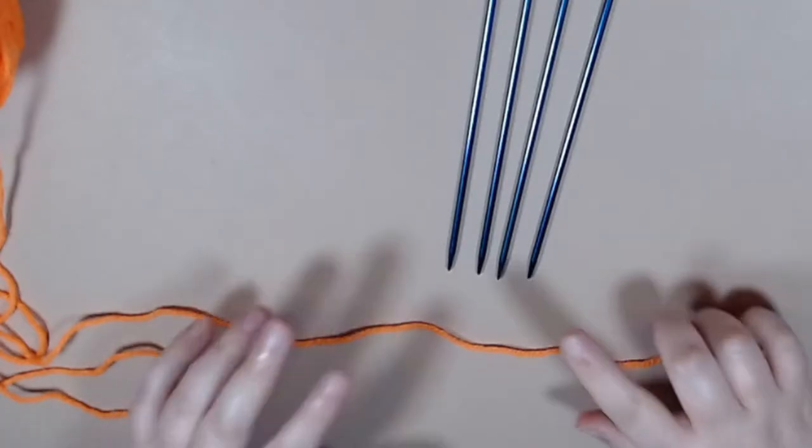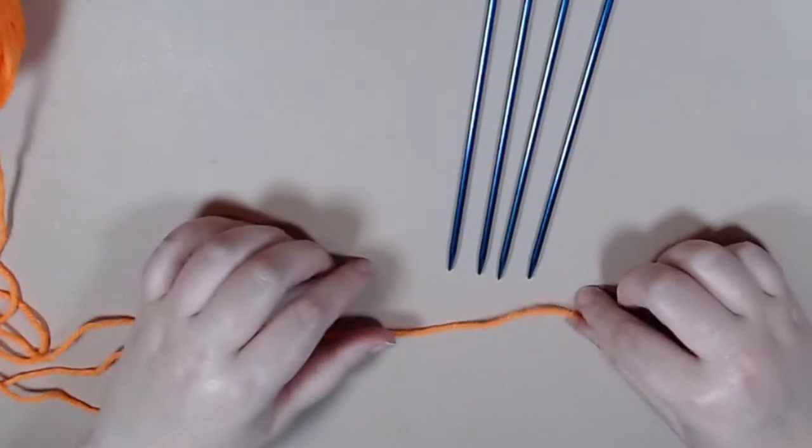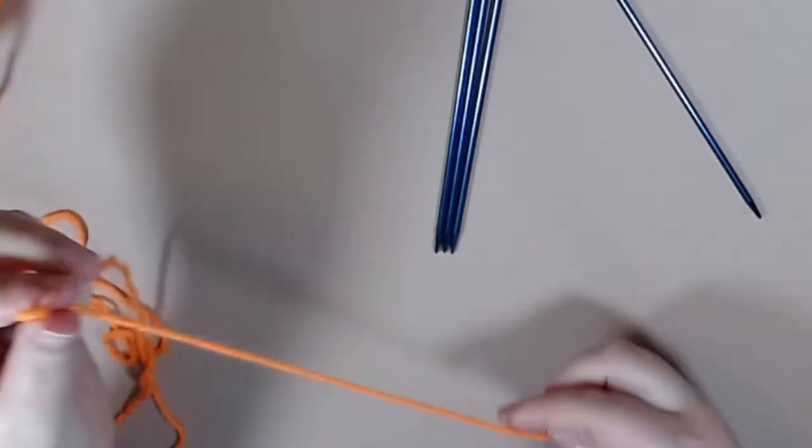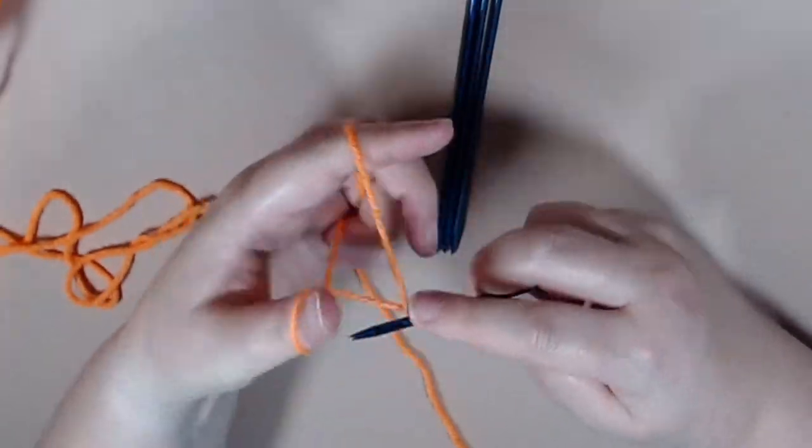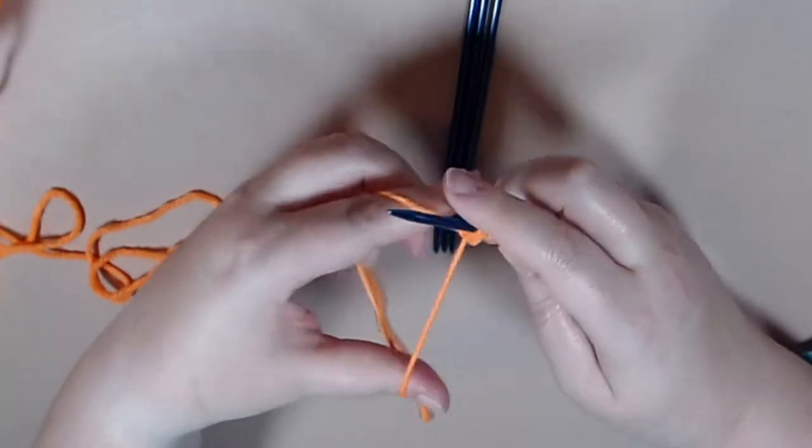Welcome to the Celtic Llama. In today's video I'll be showing you how to knit with double pointed needles. So for this video I'm just going to cast on 16 stitches.